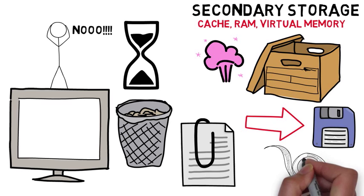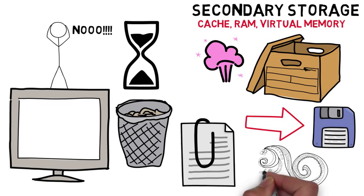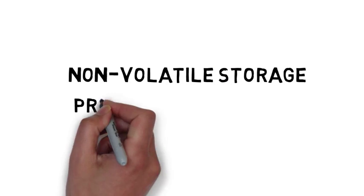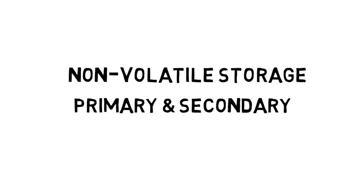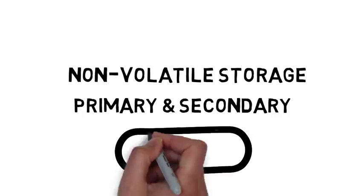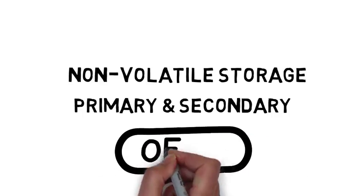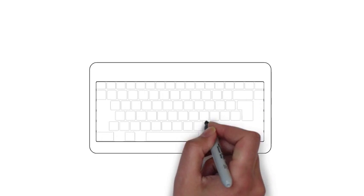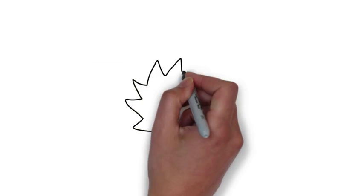But that little example brings us neatly onto secondary or non-volatile storage. The big distinction between primary and secondary storage is that data held in secondary storage remains even if the power fails or the cat appears and treads heavily all over the keys.